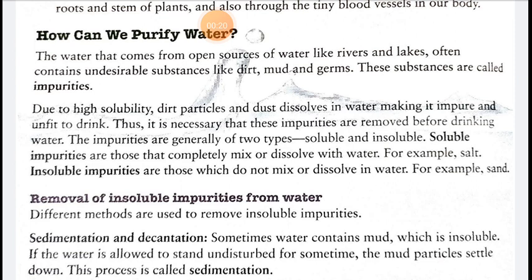The impurities are generally of two types: soluble impurities and insoluble impurities. Soluble impurities are those that completely mix or dissolve in water, like salt and sugar. Insoluble impurities are those which do not mix or dissolve in water, for example sand and mud.